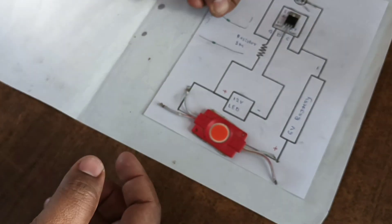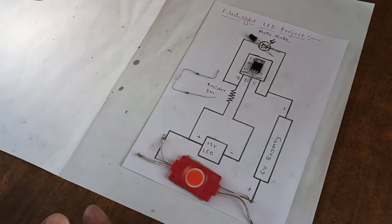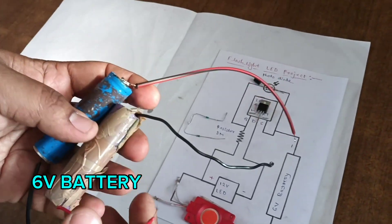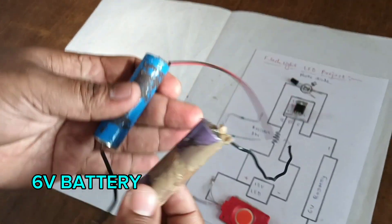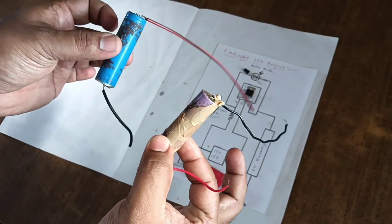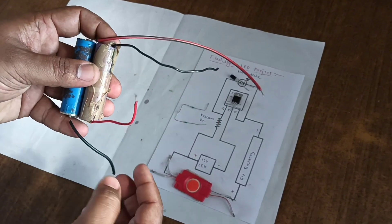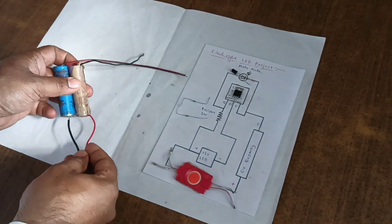Next we used in this project 6 volt battery. We have taken two lithium batteries of 3 volt and we connected these two in series to make 6 volt battery.